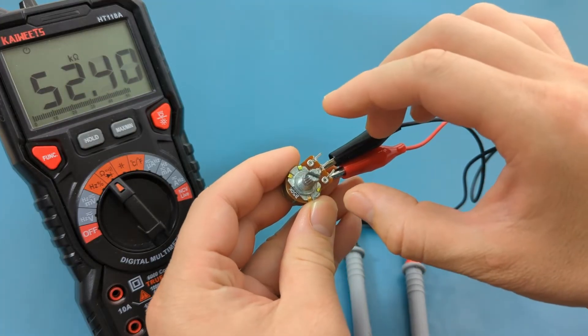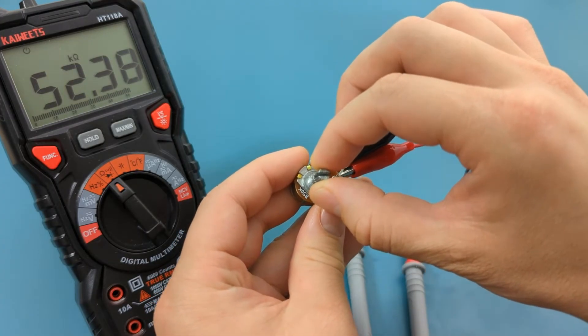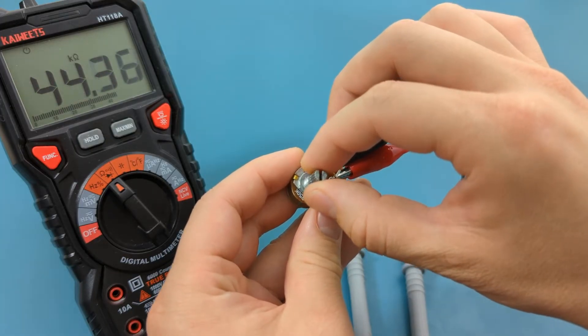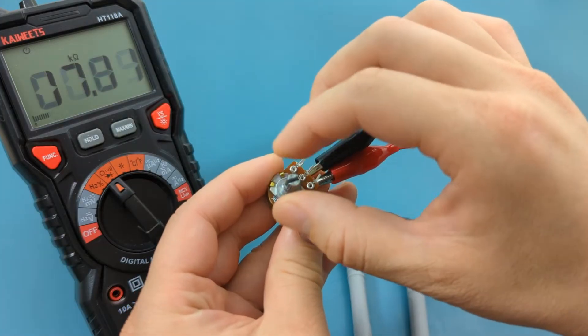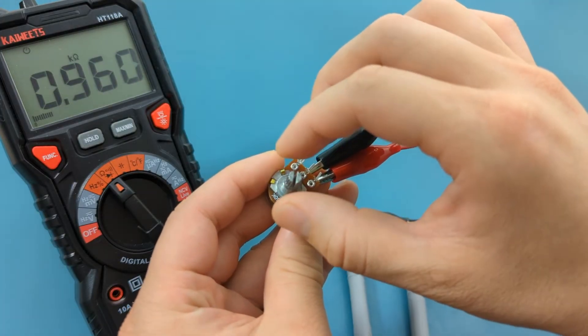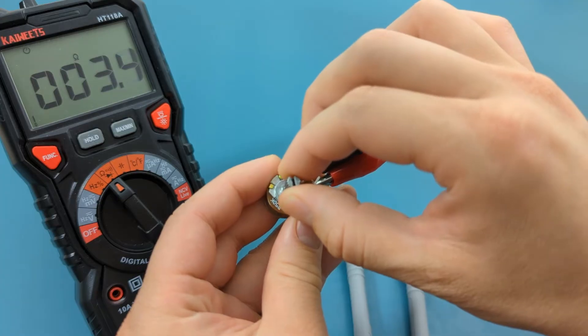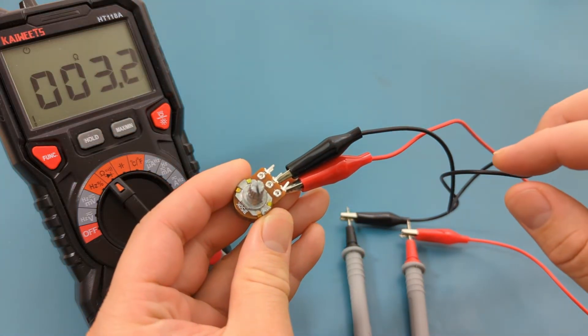The maximum resistance is around 52 ohms. When you turn the dial counterclockwise, the value of the resistance decreases. The transition of the resistance should be smooth as you move the dial clockwise or counterclockwise. The minimum resistance is around 3 ohms.